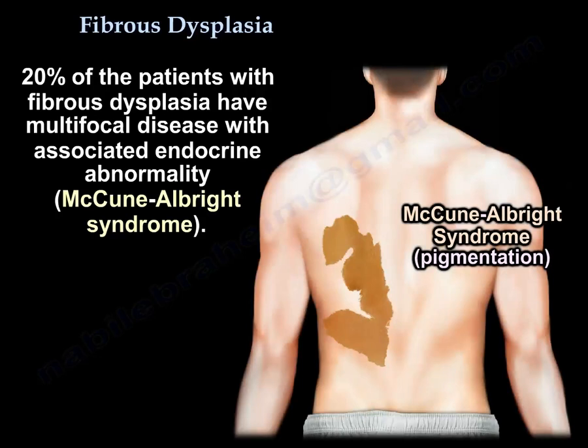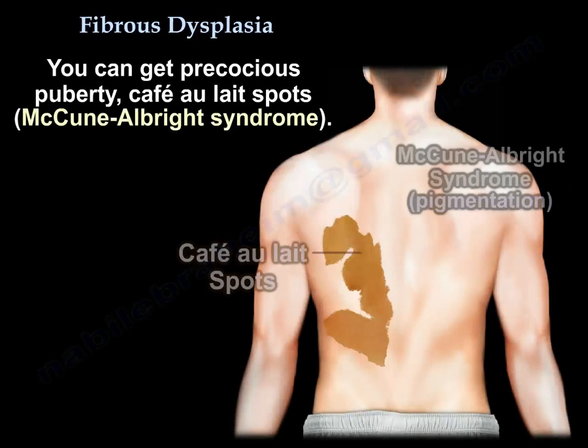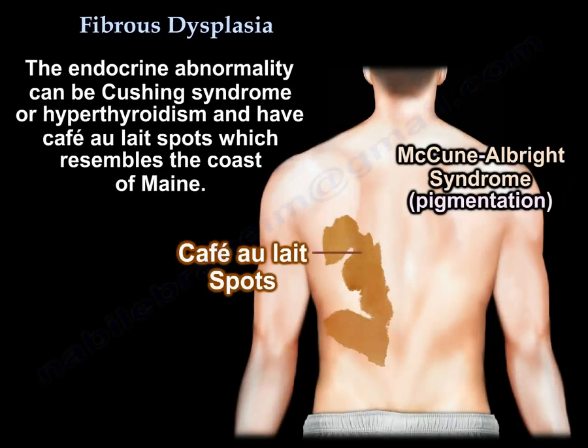Twenty percent of patients with fibrous dysplasia have multifocal disease with associated endocrine abnormality, called McCune-Albright syndrome. You can get precocious puberty and café au lait spots. The endocrine abnormality can be Cushing's syndrome or hyperthyroidism.